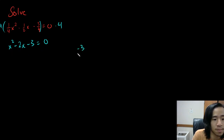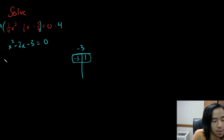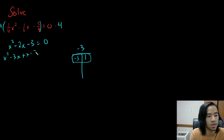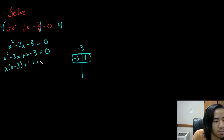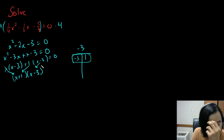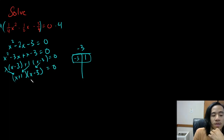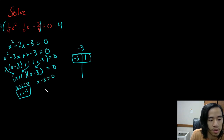So a times c is negative three, and I need two numbers that multiply to negative three and add to negative two: negative three and one — first try, that worked. Let's rewrite negative two x as x squared minus three x plus one x, then minus three, equals zero. GCF: take out an x, leaving x minus three, and then plus one times x minus three. So now I have x plus one times x minus three equals zero. Setting each factor equal to zero: x plus one equals zero gives x equals negative one, and x minus three equals zero gives x equals three.